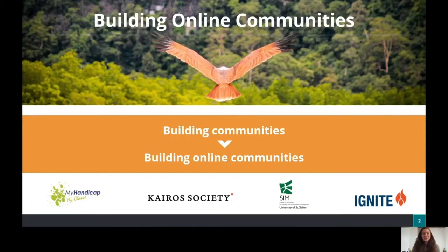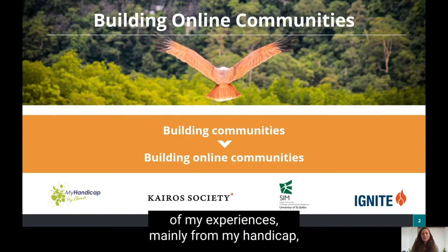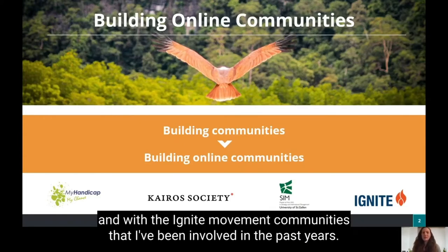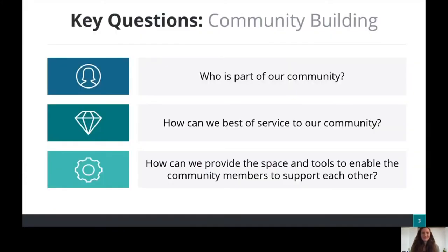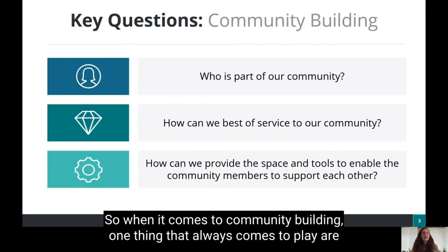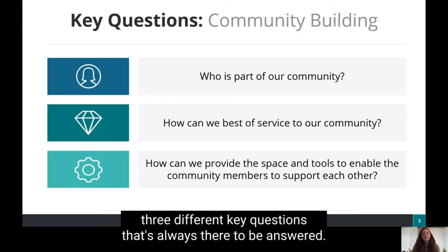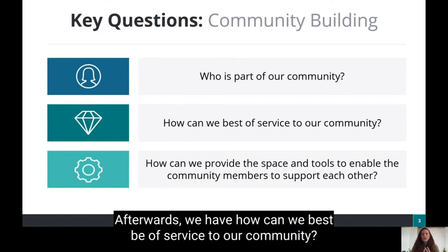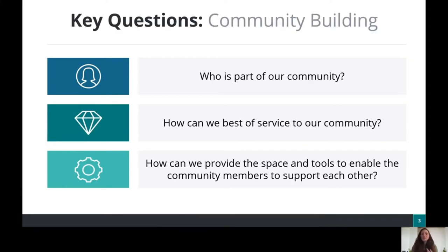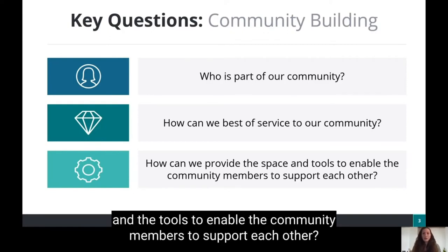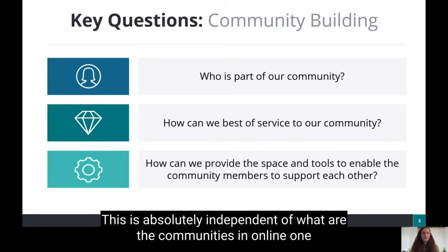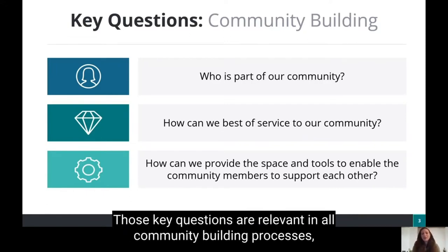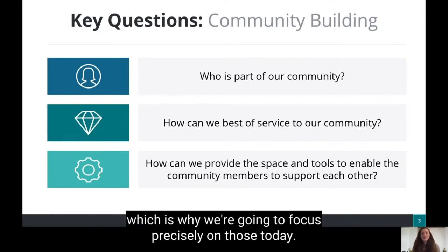For today's presentation, I'll draw on experiences mainly from My Handicap, but also from previous experiences with Kairos Society and the Ignite movement communities. When it comes to community building, three different key questions always come into play. First: who is part of our community? Afterwards: how can we best be of service to our community? And then: how can we provide the space and the tools to enable community members to support each other? These questions are relevant in all community building processes, whether online or offline.